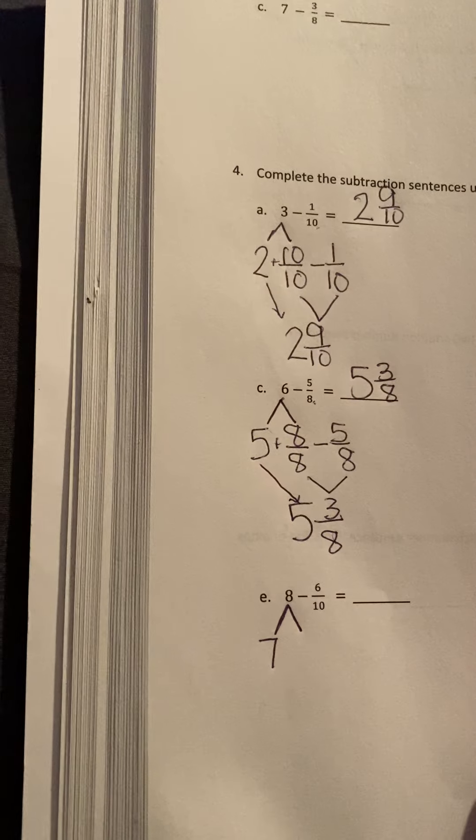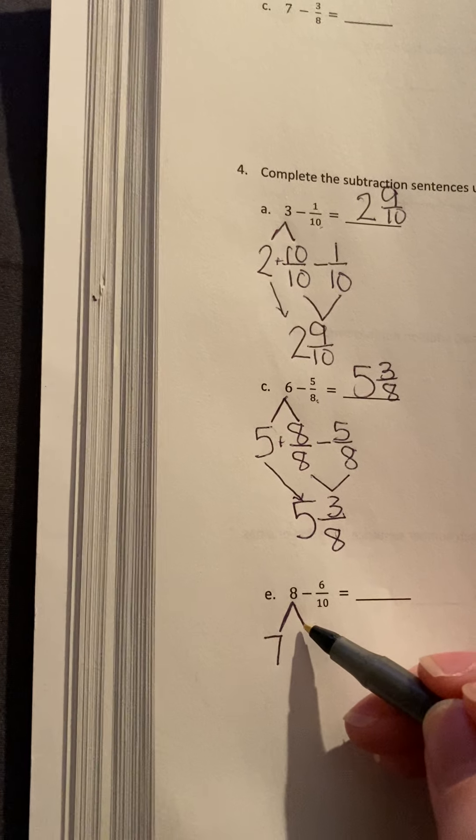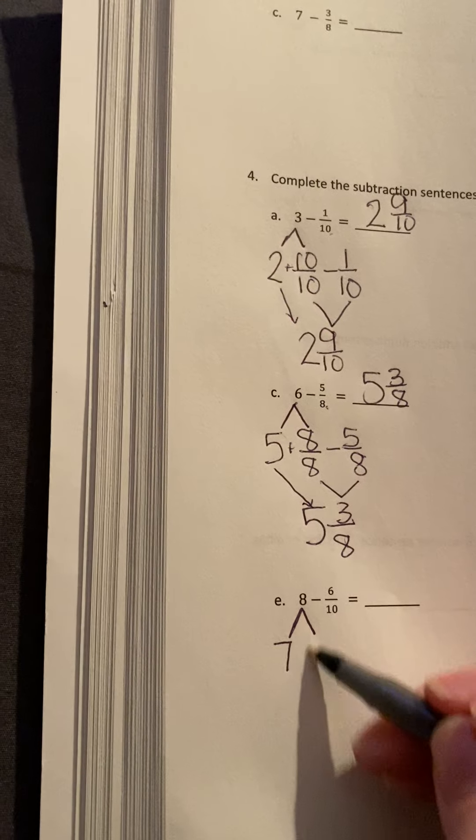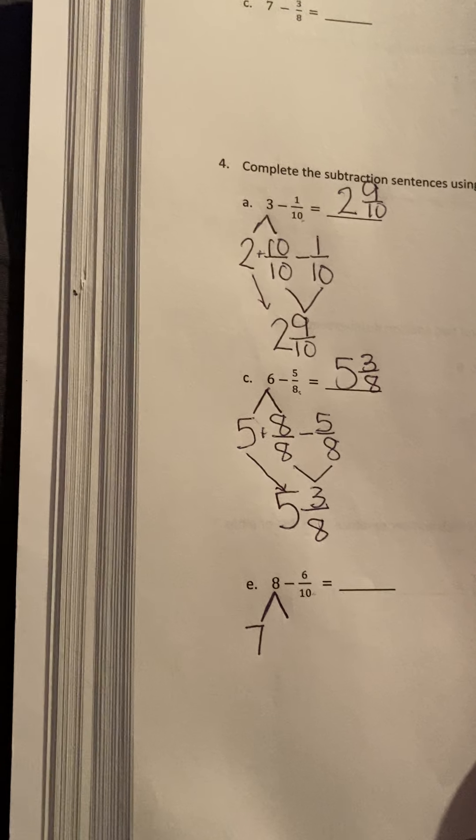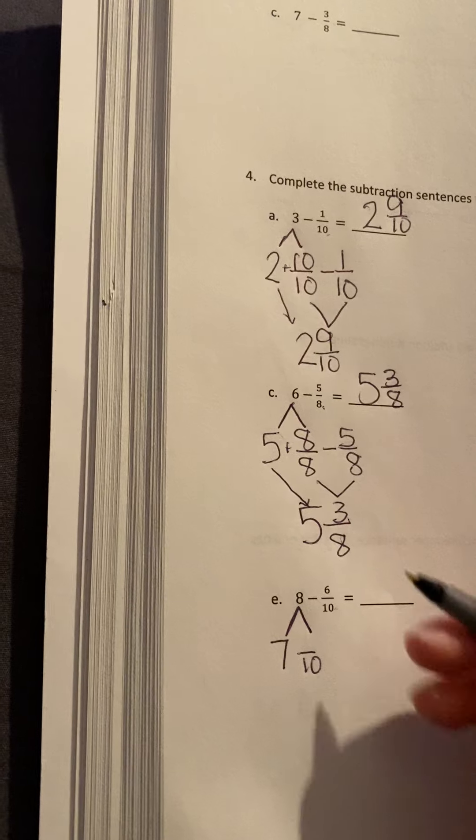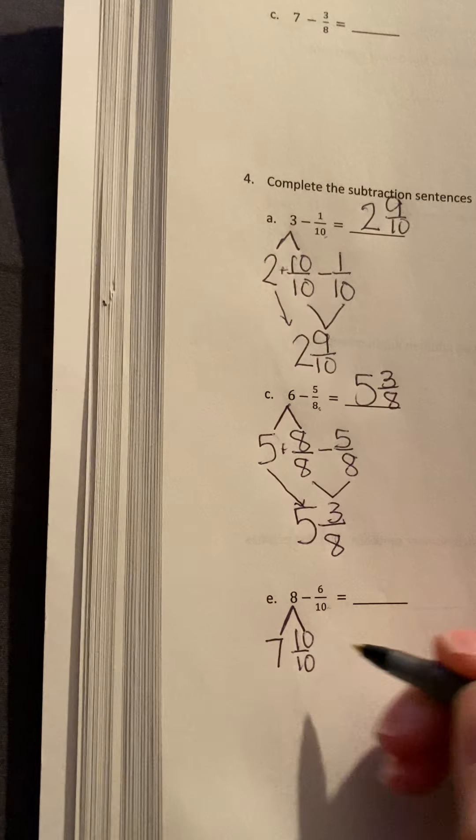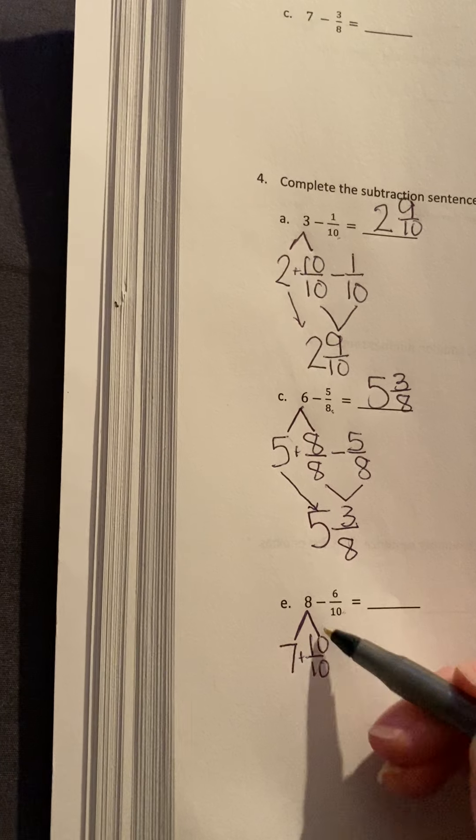And I have 7 left over. And that one whole that I took away, I want to turn it into a fraction. And I want this fraction to have the same denominator as that so that I can subtract easily. So I'm going to have it tenths. One whole is 10 out of 10. So 8 turns into 7 and 10 tenths.